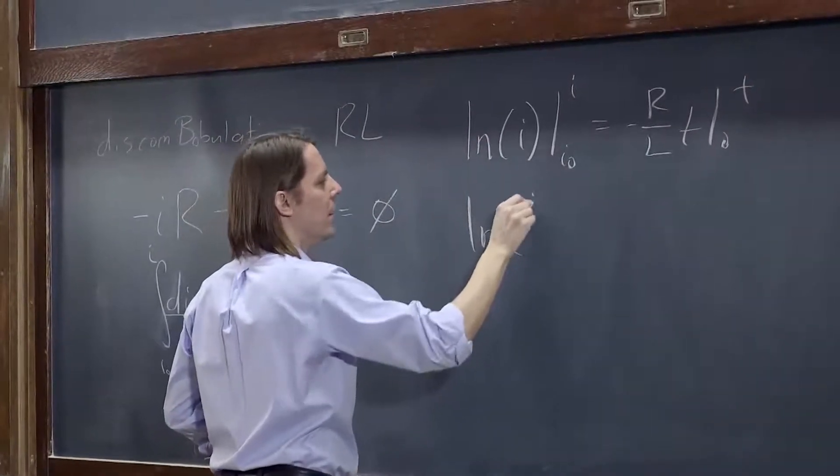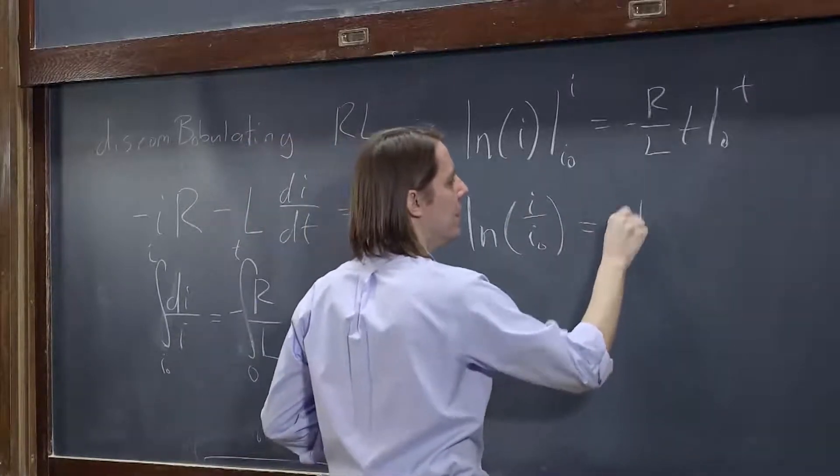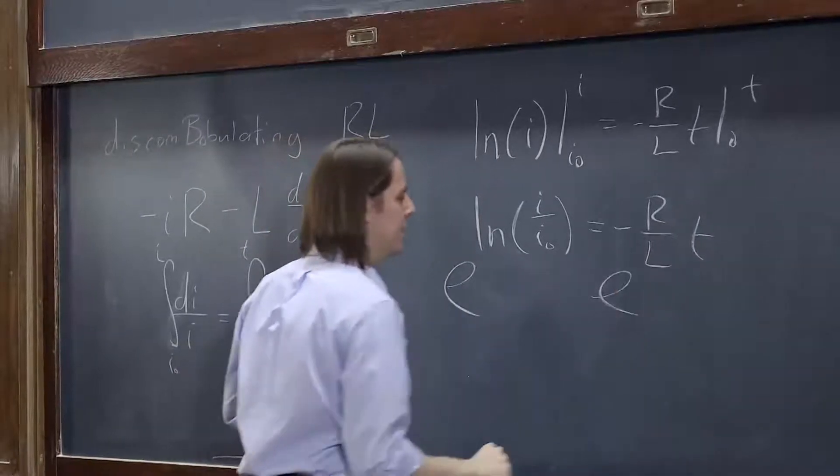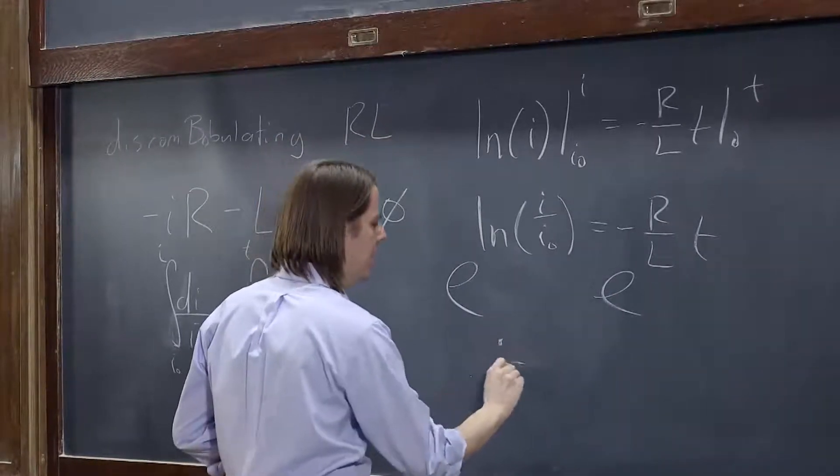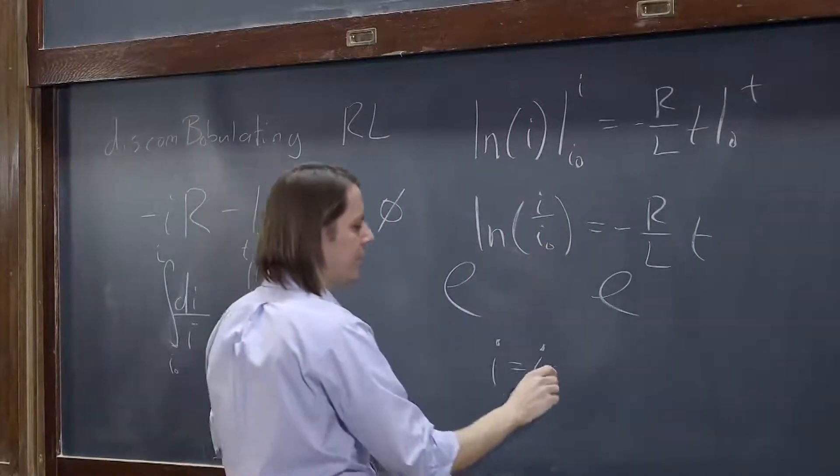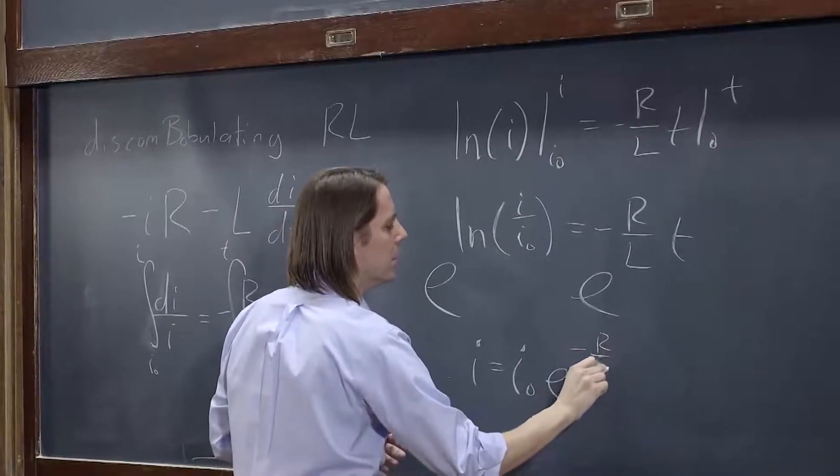This is the natural log of i over i0 equals minus R over L t. And then we take e to this and e to this, and you get that i equals i0. So this becomes i over i0, take it to the other side, equals e, i0 e to the minus R over L t.